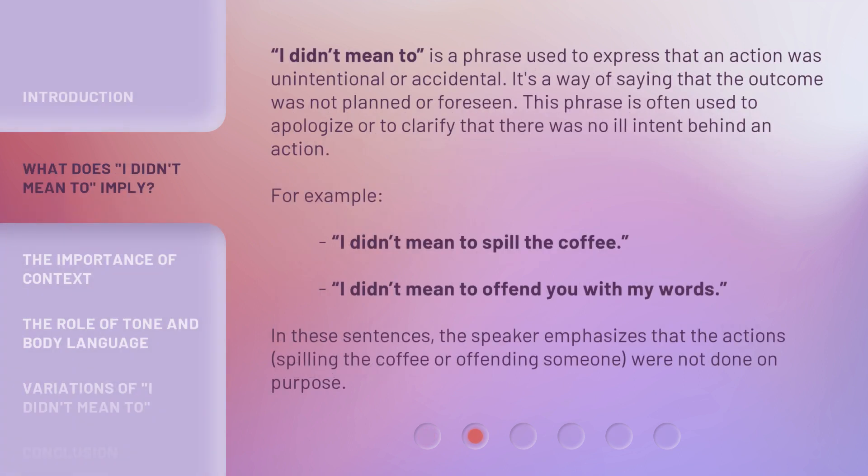'I didn't mean to' is a phrase used to express that an action was unintentional or accidental. It's a way of saying that the outcome was not planned or foreseen. This phrase is often used to apologize or to clarify that there was no ill intent behind an action. For example: 'I didn't mean to spill the coffee.' 'I didn't mean to offend you with my words.' In these sentences, the speaker emphasizes that the actions — spilling the coffee or offending someone — were not done on purpose.